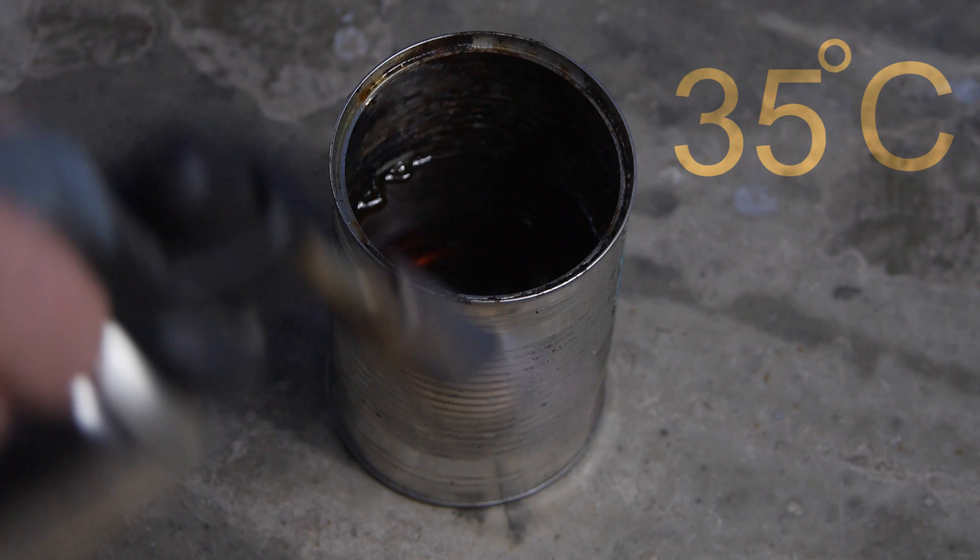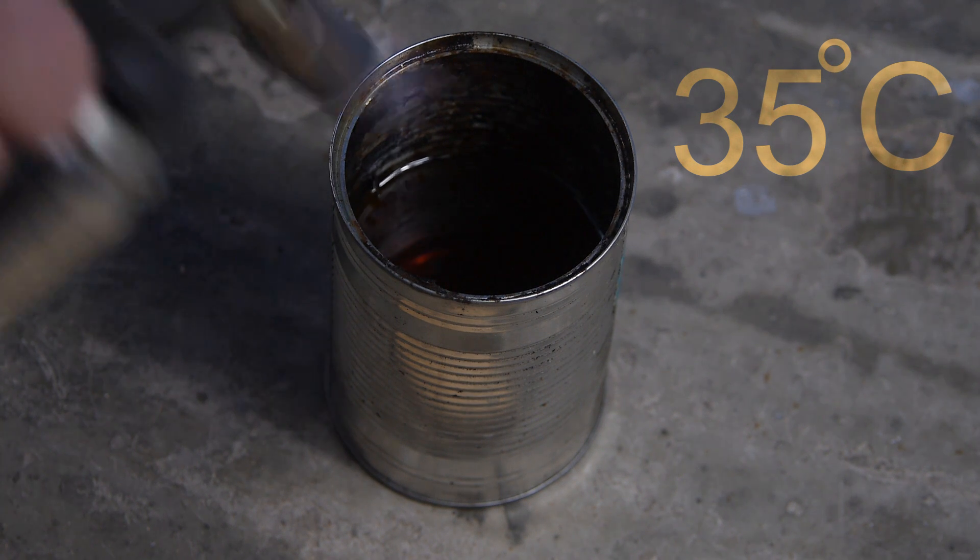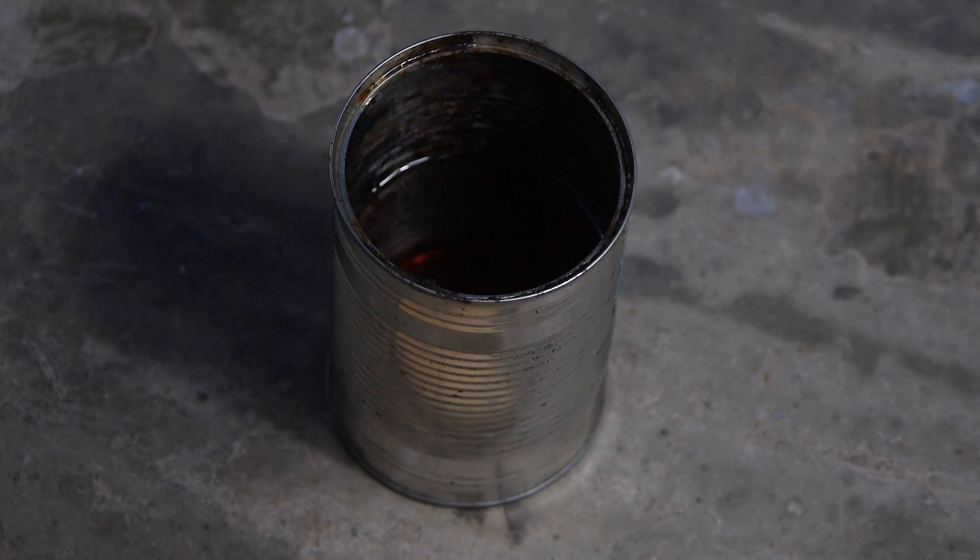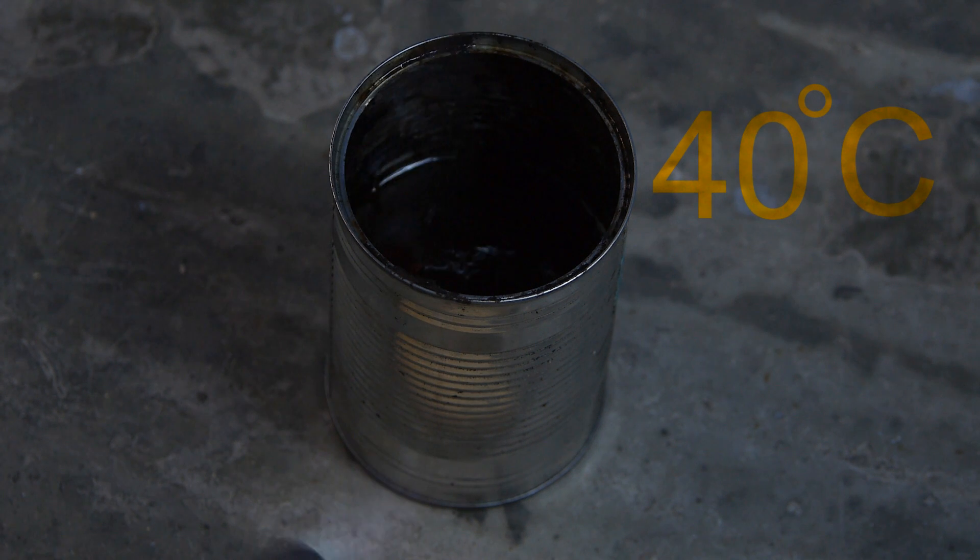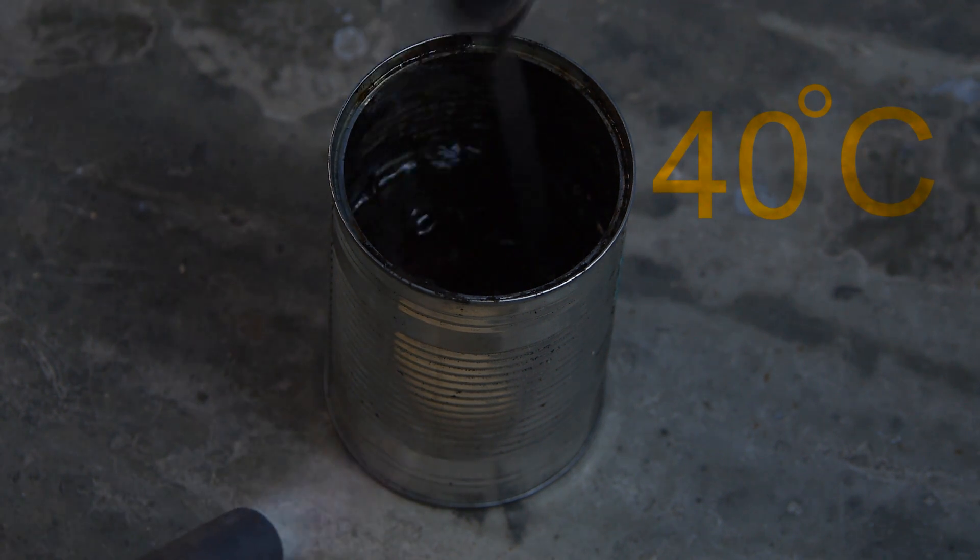Now, as you can see, there was a flicker of flame this time. It can't sustain a flame, but it does try to flash. So now we're going to 40 degrees. 40 degrees centigrade should be the flashpoint of kerosene.